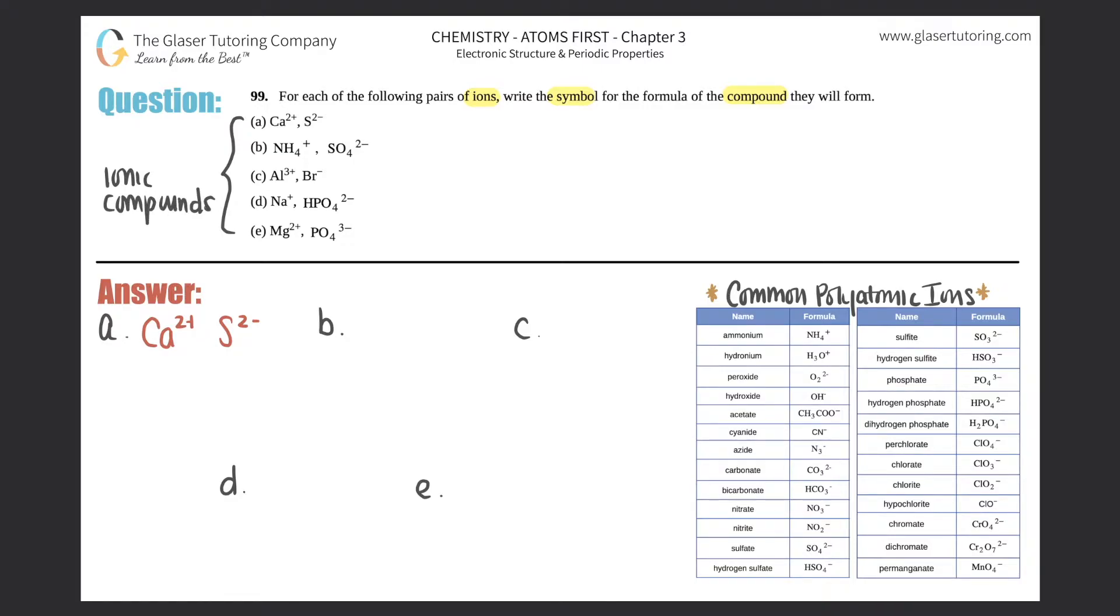There's one thing you should know about ionic compounds: you will always simplify. Meaning that if you have subscripts that can be divisible by each other, you will do that. It will always be in the most simplified version. Covalent compounds do not do that - you do not and will never simplify covalent compounds. But since I have all positives and negatives, that symbolizes it's an ionic compound, so we will simplify if we can.